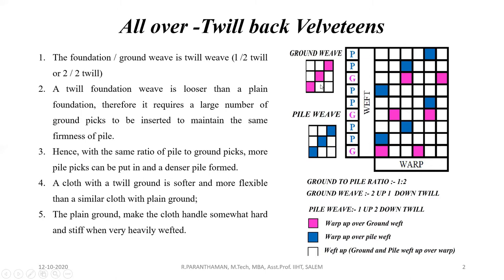See the design. Here we are using ground weave one-up two-down twill, and the pile weave one-up two-down twill. The ratio of ground to pile weave is one to two — one ground with two pile threads. The twill is arranged in the ground weft threads. In the pile threads, we are also using one-up two-down twill in the alternate ends only. This is the important point: the pile weave can be marked in alternate ends only.